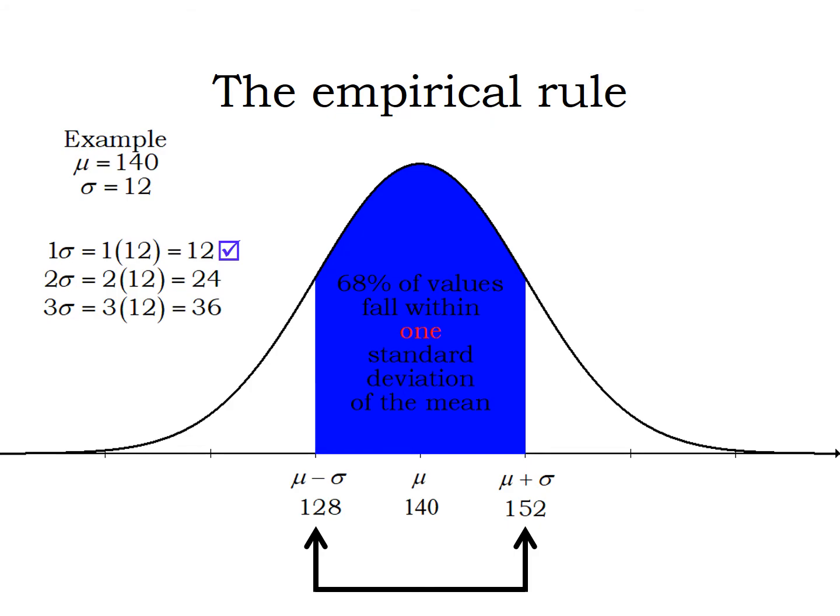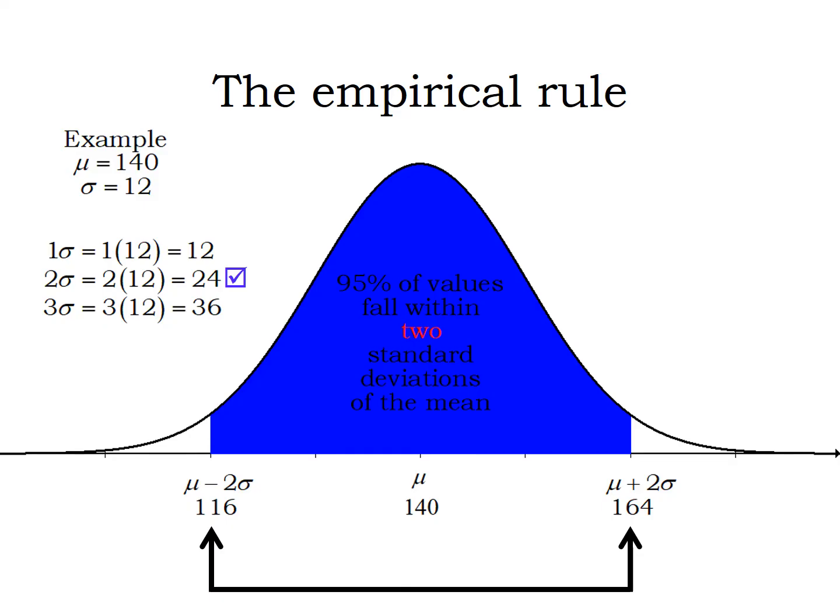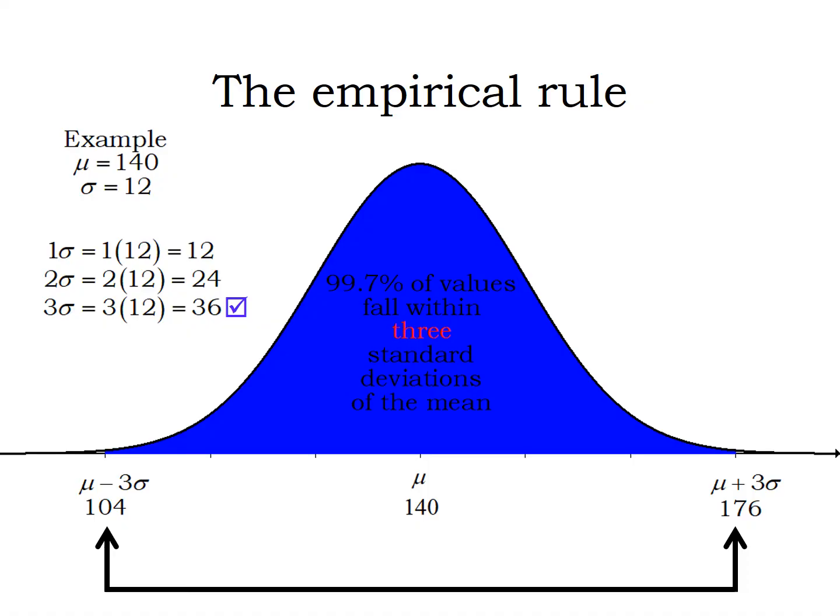The empirical rule says we're gonna have 68% of the values fall within one standard deviation of the mean. If we expand those limits out to two standard deviations, so I've got 12 more in each direction or 24 total from the mean left and right, we're gonna have 95% of the values fall in that range. Three standard deviations would be 36 in each direction, so 104 and 176, and the empirical rule says 99.7%—that's 997 out of 1000 values—will be within that three standard deviation limit.